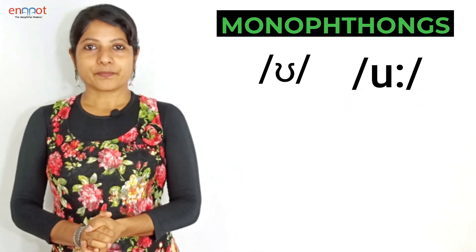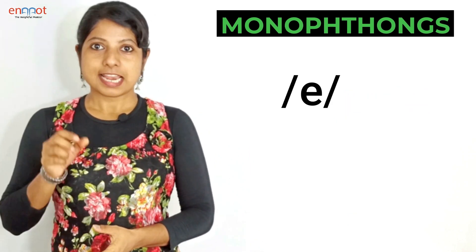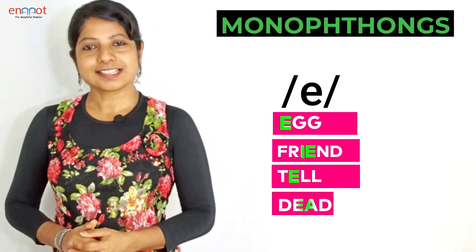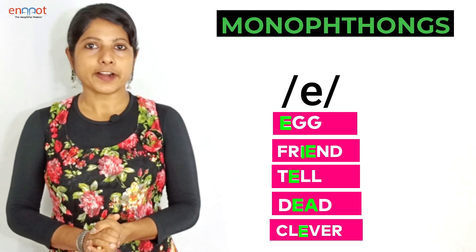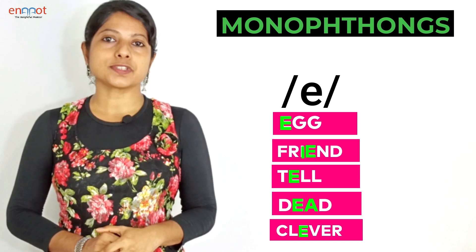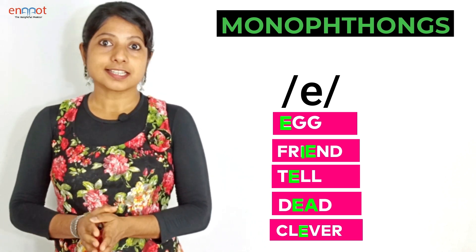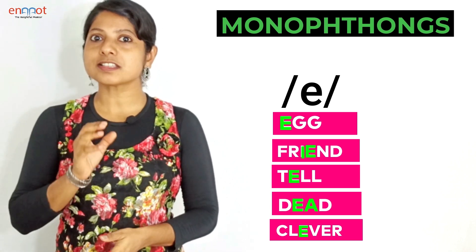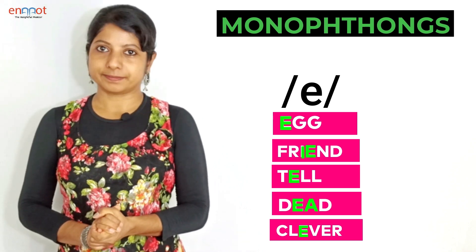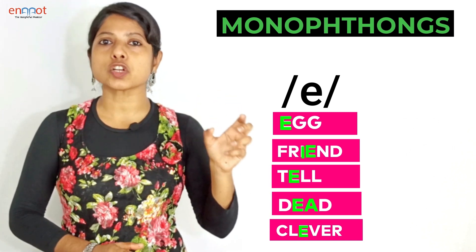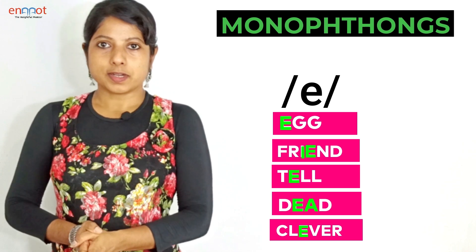The next sound is /e/ and the words are: egg, friend, tell, dead, clever. In the word 'friend', the letters I and E together produce the sound /e/. In 'dead', the letters E and A together produce the sound /e/. In 'clever', the first E produces the sound /e/. This is a short vowel.